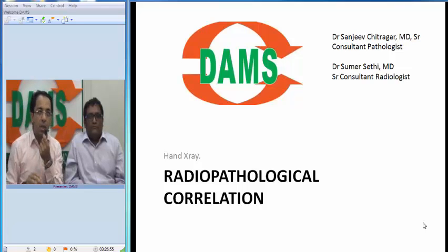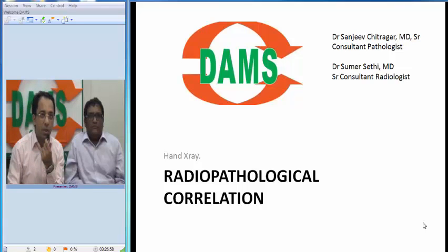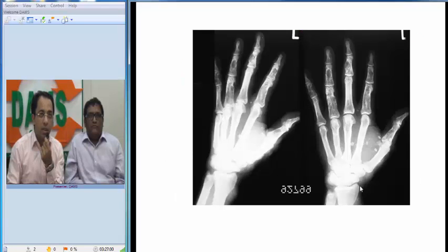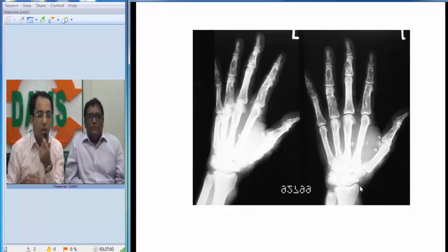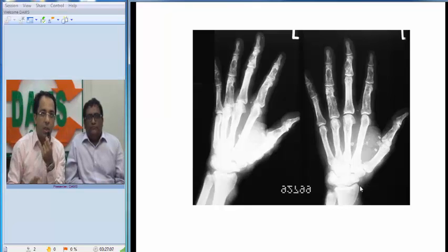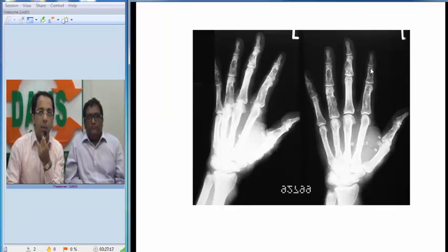To emphasize this point, I will show you an X-ray — a hand X-ray of a patient. Let us see if you can pick up the findings and make a diagnosis, and then we will see the pathological findings. You can see the hand X-ray of both sides. These are the metacarpals — they look okay — and you can see some lesion in this proximal phalanx, and one more lytic lesion in this middle phalanx.